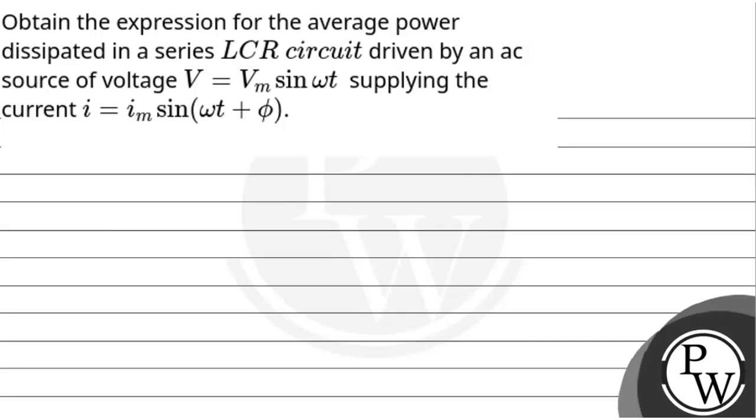Hello, so let's read this question. The question is: obtain the expression for average power dissipated in a series LCR circuit driven by an AC voltage source, voltage V equals Vm sin ωt, supplying